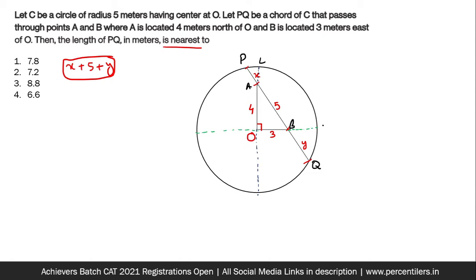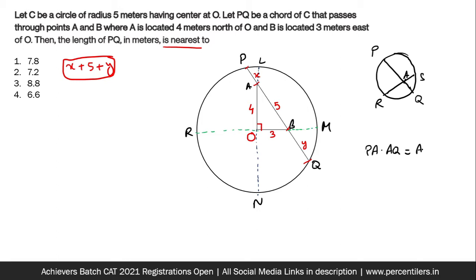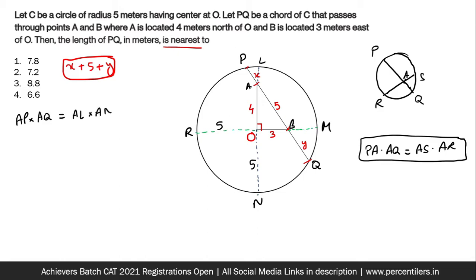Let us name the other parts L, M, N, R. We know the property of two chords intersecting inside a circle: PQ and RS meeting at point A gives PA × AQ = AS × AR. We will use this property here. The radius is 5, so ON = OR = 5. The diameter is 10, so AL = 1 and AN = 9. AP is x and AQ is 5 + y.